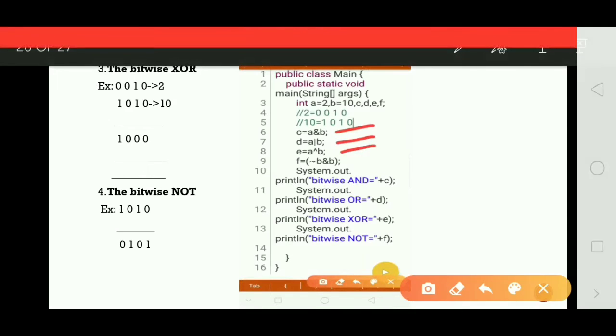Next we have the bitwise XOR operator. The XOR operator combines bits such that if exactly one operand is 1, then the result is 1, otherwise the result is 0. See, exactly one operand is 1. Otherwise, in other cases, it results in 0.